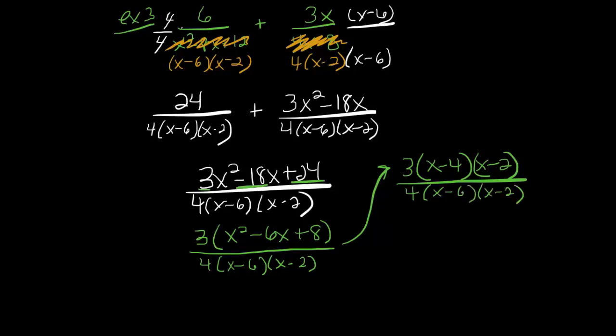Over 4 times x minus 6 times x minus 2. Excellent. Now that the numerator and denominator are factored, notice we have a common factor in both of them, which obviously we're going to cancel, since multiplying by x minus 2 is canceled by the dividing by x minus 2. So our simplified answer is 3 times x minus 4 over 4 times x minus 6.